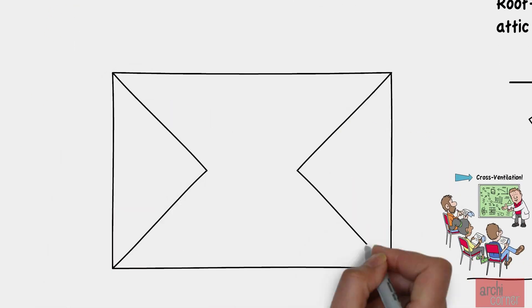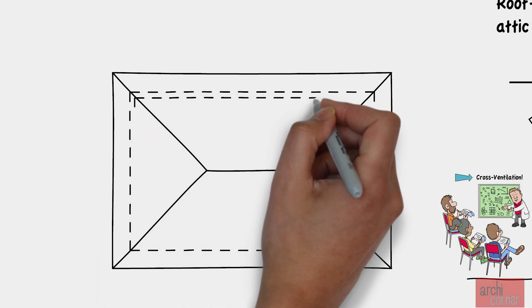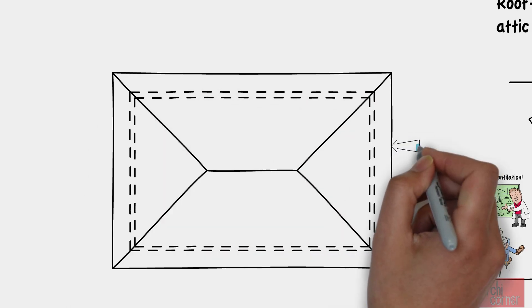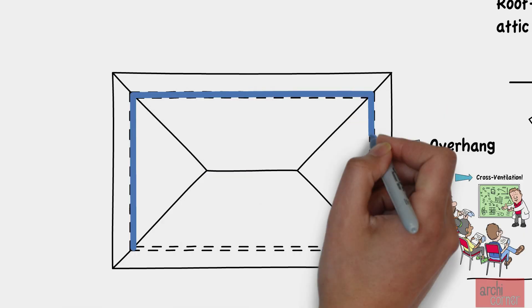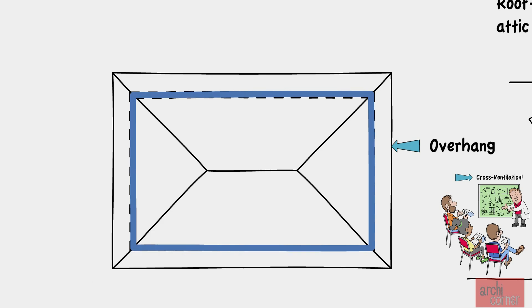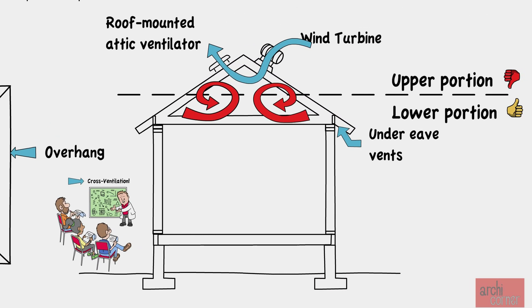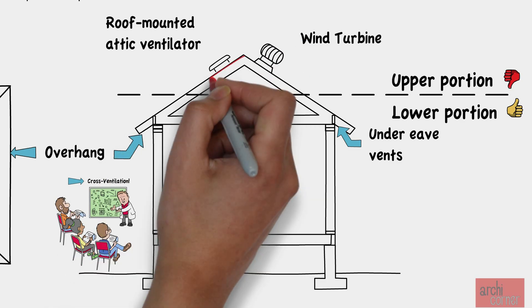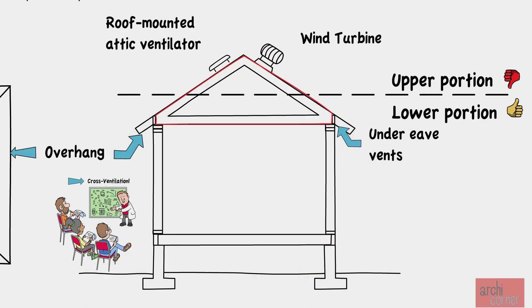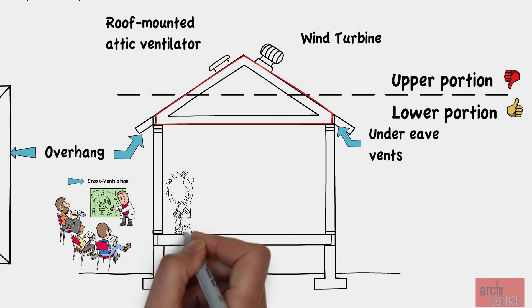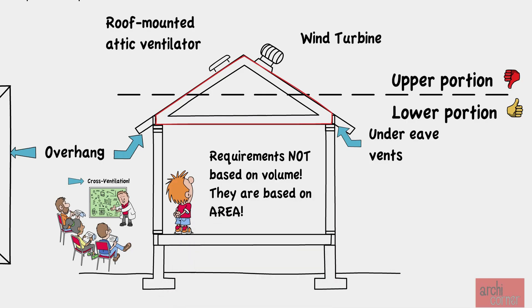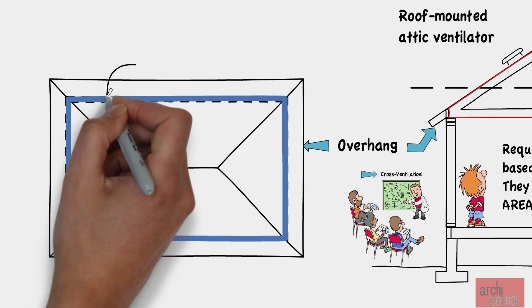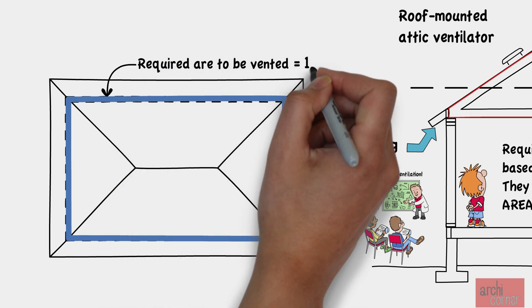Let's start by figuring out the area of the roof that needs to be vented. In a plan view, most roofs have an overhang, but the actual attic space that needs to be vented is usually limited to the building outline. The reference code requirements are not based on the volume of the attic space — they are based on the area, which we get from the floor plan view. For this exercise, let's assume the area of the roof attic is 1,000 square feet.